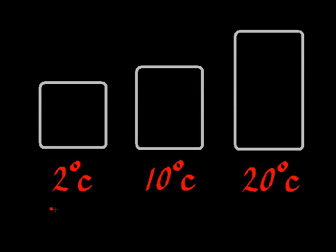This diagram denotes a parcel of air at three different temperatures: 2 degrees centigrade, 10 degrees centigrade, and 20 degrees centigrade. The parcel of air is the same size in each case. However, the different size boxes denote the maximum amount of water that this parcel of air can hold at these three different temperatures.